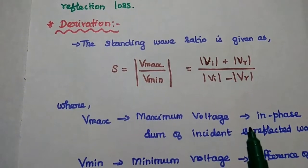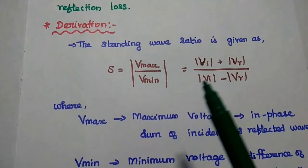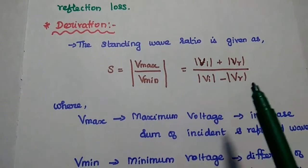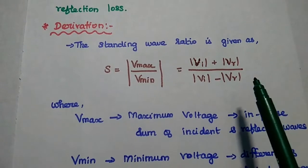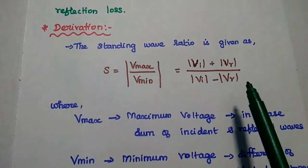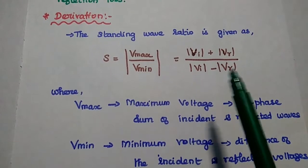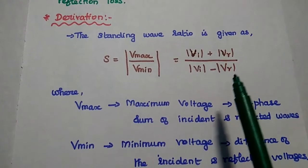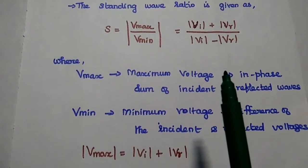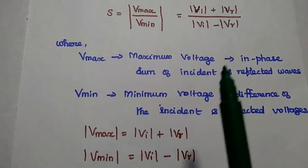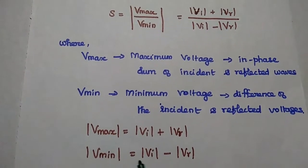For that, we can consider the standing wave ratio S, which is equal to Vmax divided by Vmin. Here, Vmax is the maximum voltage of the standing wave — it is the sum of the incident and reflected voltages. The minimum voltage Vmin is obtained by subtracting the reflected voltage from the incident voltage. So we can express the standing wave in terms of incident and reflected wave voltages.